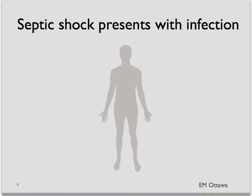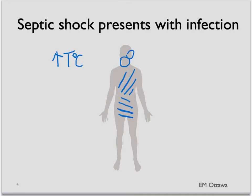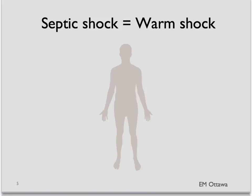The patient will present with signs of infection, sometimes subtle. They might have a fever. On examination, we want to be looking for any signs of infection: ears, throat, neck stiffness that may signify meningitis, sputum production, cough for pneumonia, abdominal pain, any dysuria that signifies a urinary tract infection. We're also looking for cellulitis in the extremities or any part of the skin. Due to the peripheral vasodilation, the patient in septic shock will be warm and flushed, also known as warm shock.